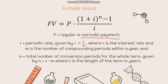In the formula, i is the periodic rate solved using i = r/m, where r is the interest rate and m is the number of compounding periods per year. n is the total number of conversion periods given by n = t × m, where t is the length of the term in years. So this is the complete formula for the future value of ordinary annuity.